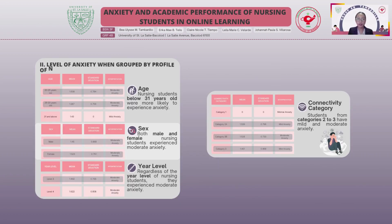When nursing students were grouped according to their profiles, significant findings were determined. Regarding age, students aged 20 to 25 and 26 to 30 years old experienced moderate anxiety, while students 31 years old and above experienced mild anxiety, implying younger students were more likely to experience anxiety. In terms of sex, both male and female nursing students experienced moderate anxiety. Students from level 3 and level 4 were also found to experience moderate anxiety. Regarding connectivity, category 2B students experienced moderate anxiety, categories 2A and 3 experienced mild anxiety, while category 1 experienced minimal anxiety only.